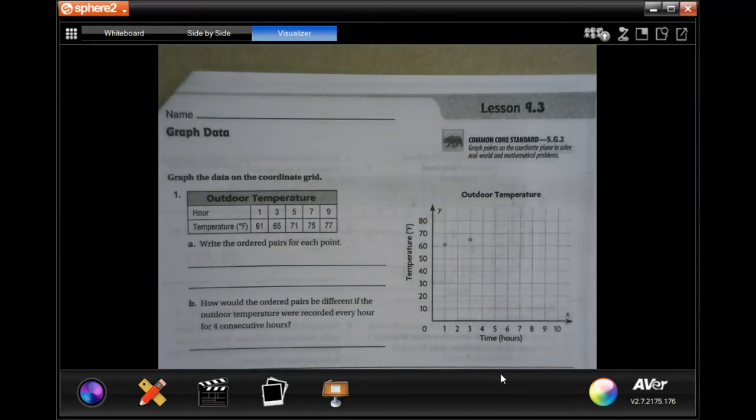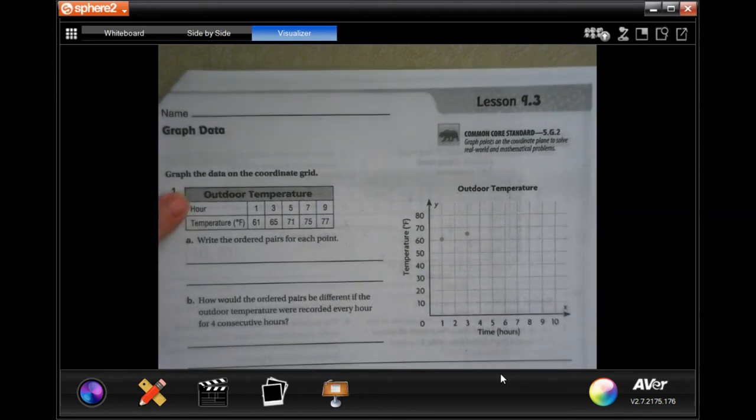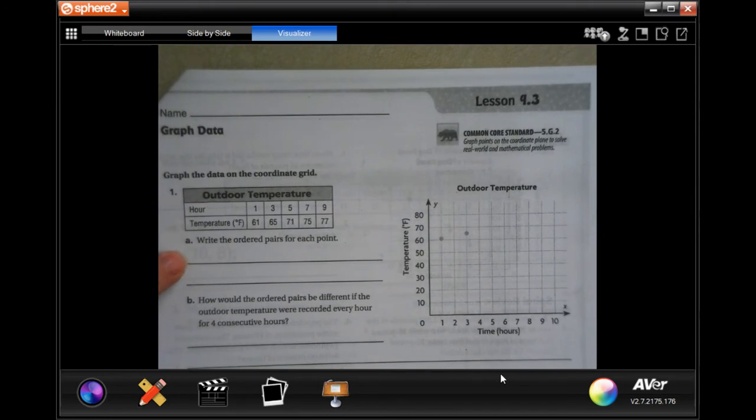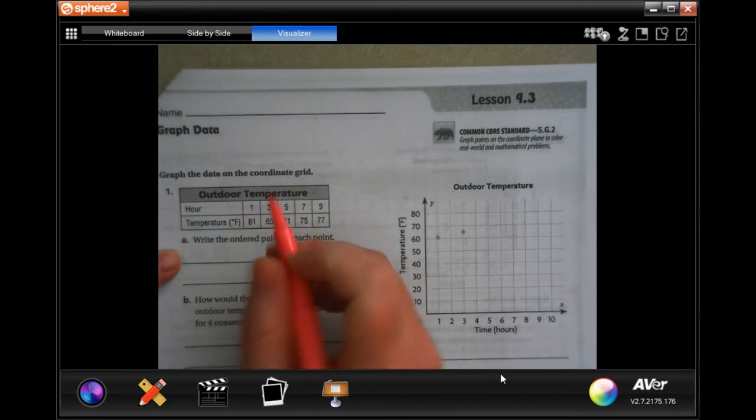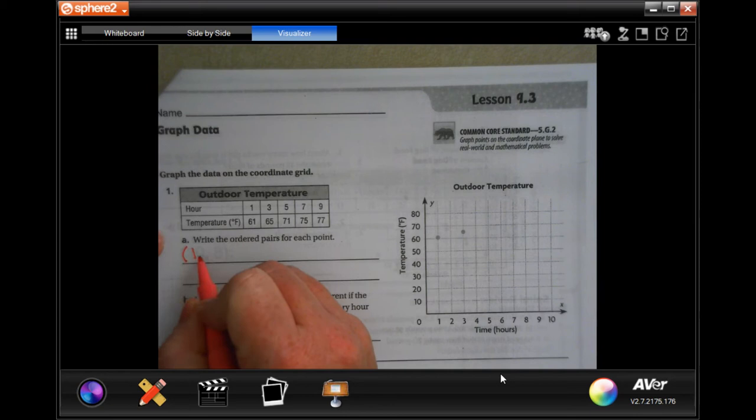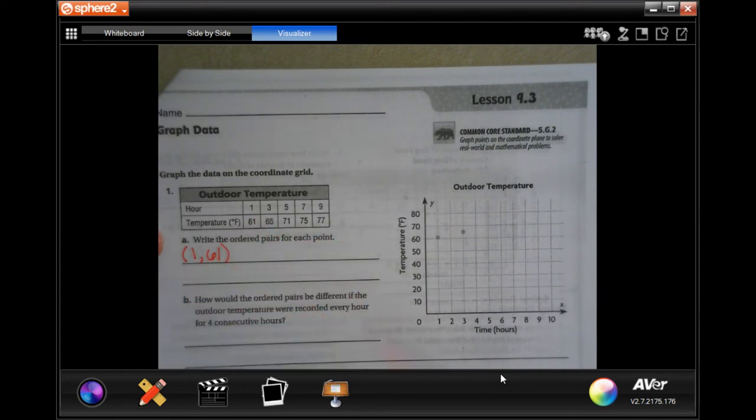Hey y'all, welcome to fifth grade Chapter 9 Lesson 3. We're going to get started with number one. They filled out the chart, and it just wants us to write the ordered pairs. So all we're going to do is parentheses, and then top then bottom.